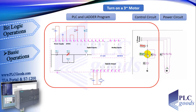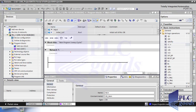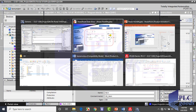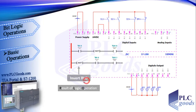We've seen how we can change normally open or close contact states. Now we're going to learn this new instruction — Invert RLO. RLO is short for Result of Logic Operation. Let's test this program to understand what this instruction does.